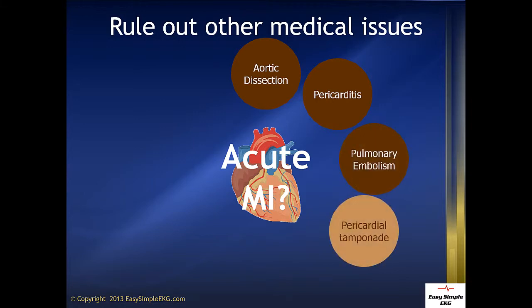Pericardial tamponade will usually stop the mechanical function of the heart if it is an acute trauma, but over a long period of time you would be surprised at the amount of fluid that can accumulate around the heart and it still continue to function.